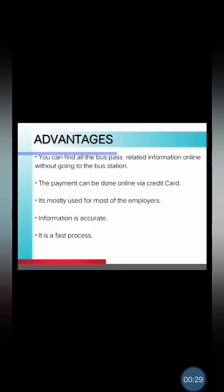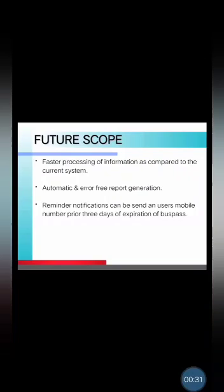Next is the Feature Scope. Faster processing of information as compared to the current system. Automatic and error-free report generation. Reminder notifications can be sent to users' mobile numbers 3 days prior to the expiration of the bus pass. The remaining slides will be explained by Darshanan Arnavre.